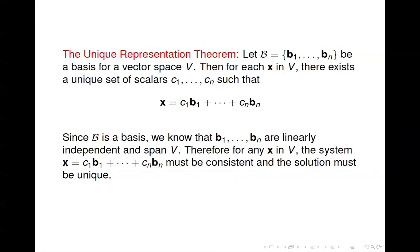It's really saying two things. It's saying that the system is consistent — you can take a linear combination of the Bs and produce any vector in the vector space. And it's also saying that the solution to that system is unique. Both these things follow from the fact that B is a basis for V. The fact that it's a basis tells you that these vectors span V, so that system will have a solution no matter what X is. It also tells you that these vectors are linearly independent, so the solution will be unique — there are no free variables.